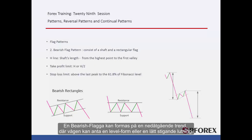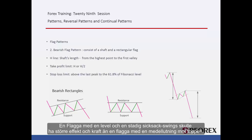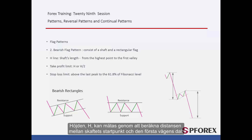A bearish flag can be formed on a downward trend, in which waves may have a level shape or a gentle upward slope. A flag with level and steady zigzag swings would have more effect and power rather than a flag with a moderate slope towards the top. Height can be measured by calculating the distance between the starting point of the shaft and the valley of the first wave.